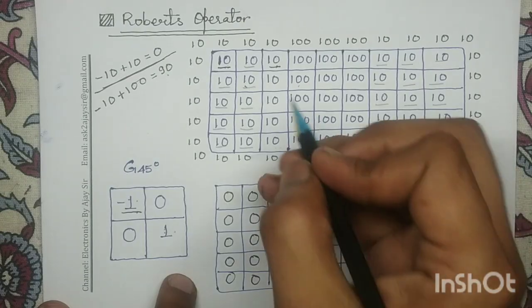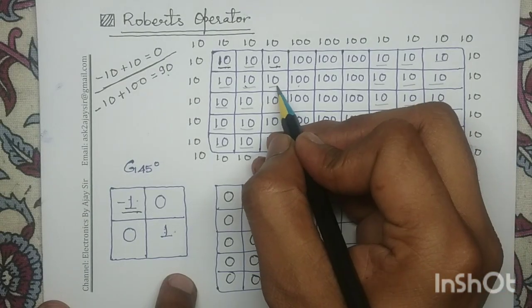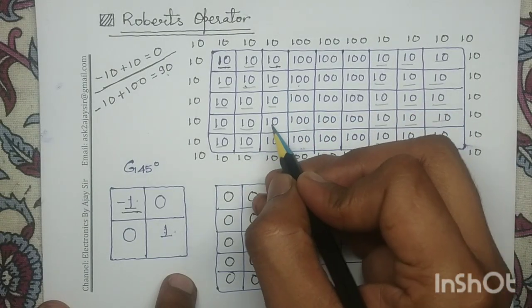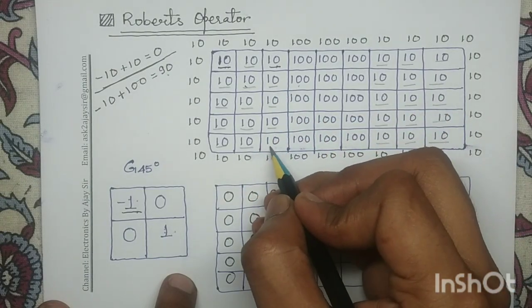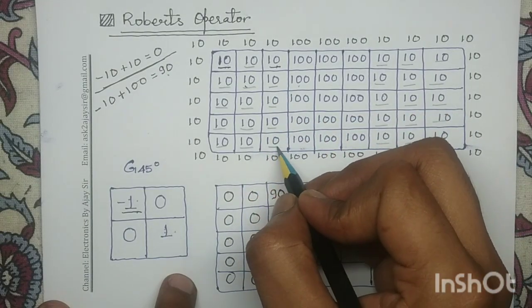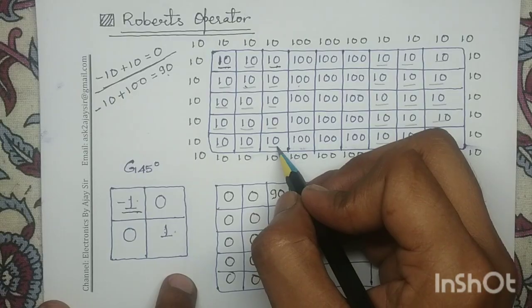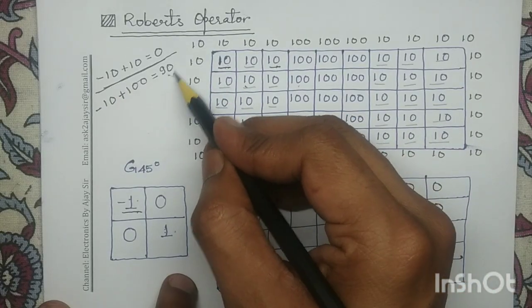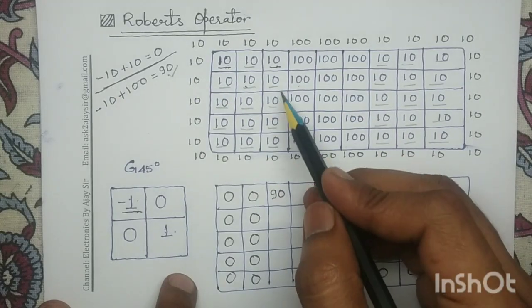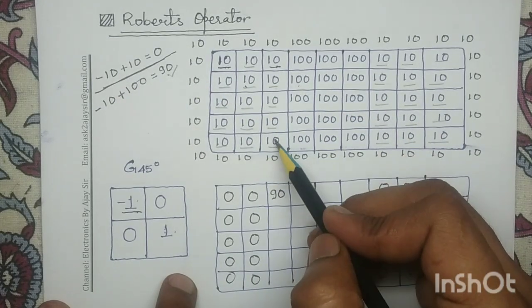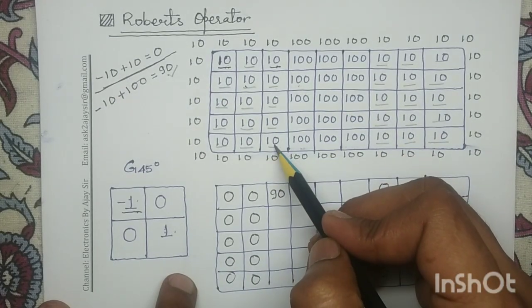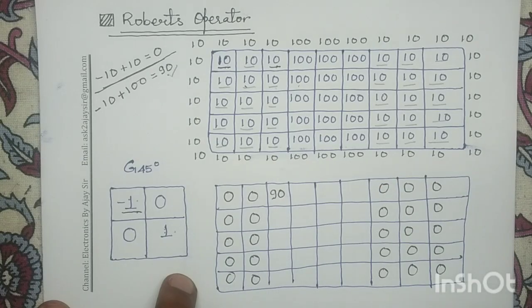In the similar manner, if you determine the response for these four pixels, you will get the same response equal to 90. So the response for these four pixels is equal to 90.